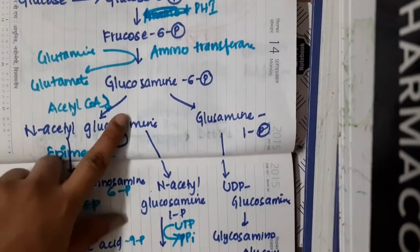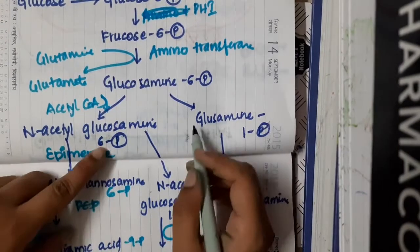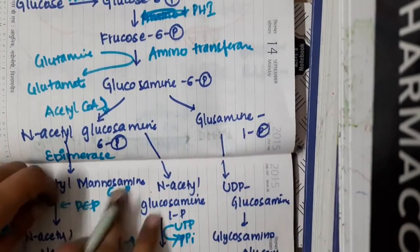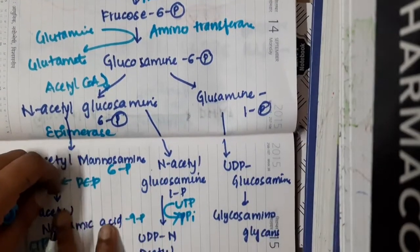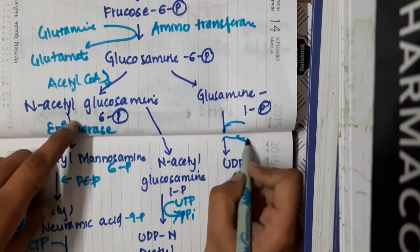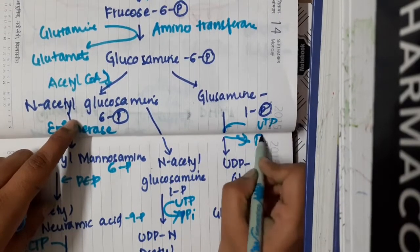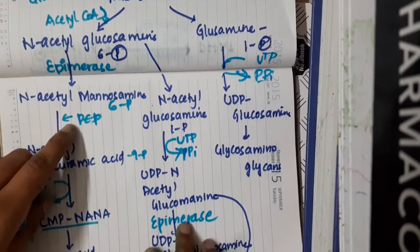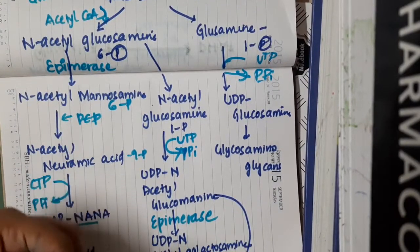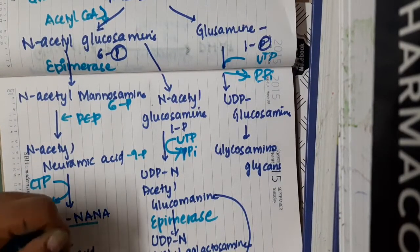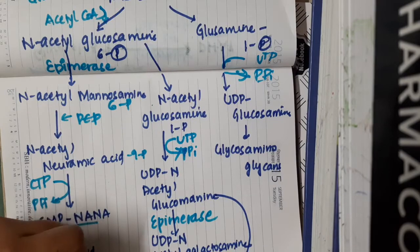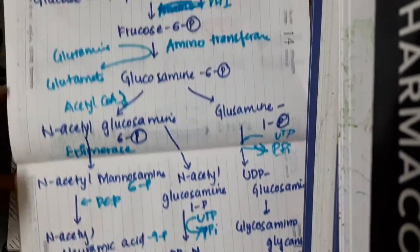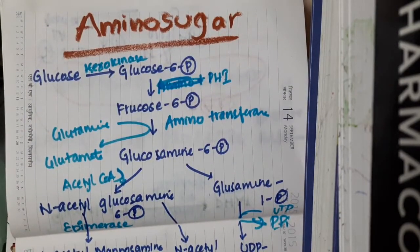Glucosamine-6-phosphate, in the presence of isomerase, forms glucosamine-1-phosphate, which combines with UTP to form inorganic pyrophosphate and UDP-glucosamine, which will form glycosaminoglycans. This is the pathway for synthesis of amino sugars. Thank you for watching.